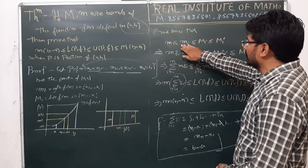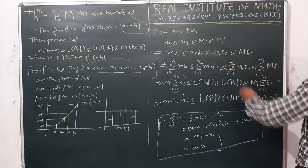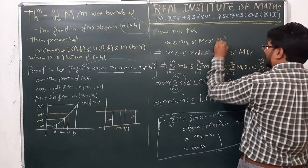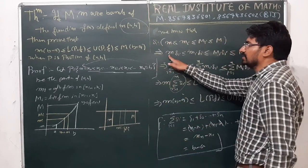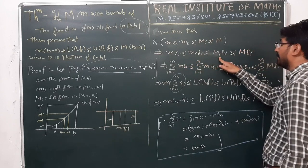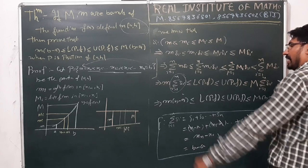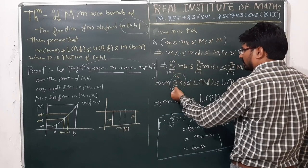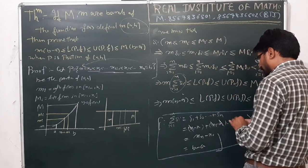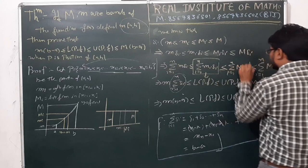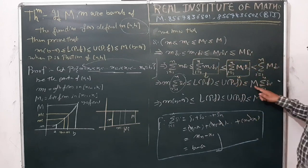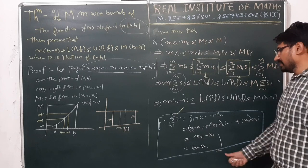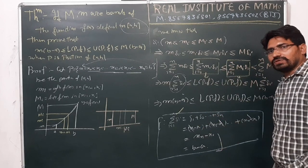So we have the inequality m ≤ mᵢ ≤ Mᵢ ≤ M. Multiplying by Δᵢ: m·Δᵢ ≤ mᵢ·Δᵢ ≤ Mᵢ·Δᵢ ≤ M·Δᵢ. Summing from i = 1 to n, with m and M as common factors and Σ Δᵢ = b − a, we get the final inequality: m(b−a) ≤ L(P,f) ≤ U(P,f) ≤ M(b−a). This is the required inequality. Thank you very much.